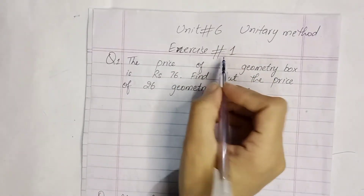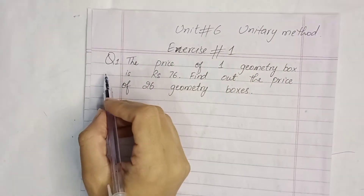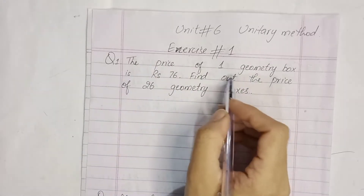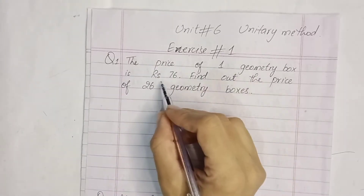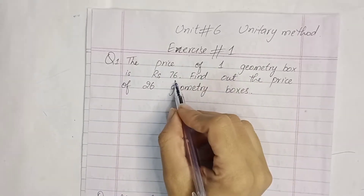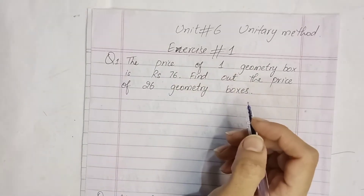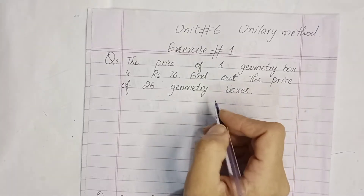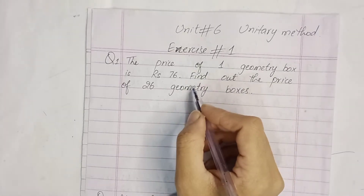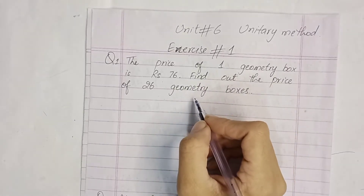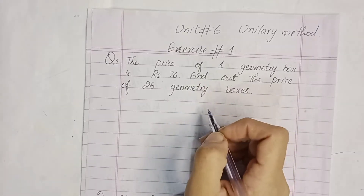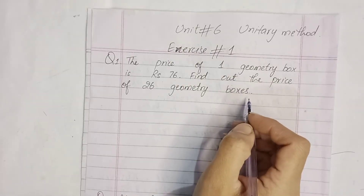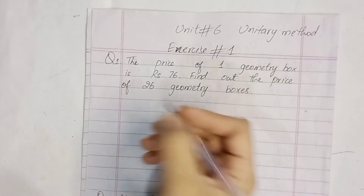Exercise number one, question number one. The price of one geometry box is rupees 76. Find out the price of 26 geometry boxes. So they have given us the price of one, and we have to find the price of 26 geometry boxes.